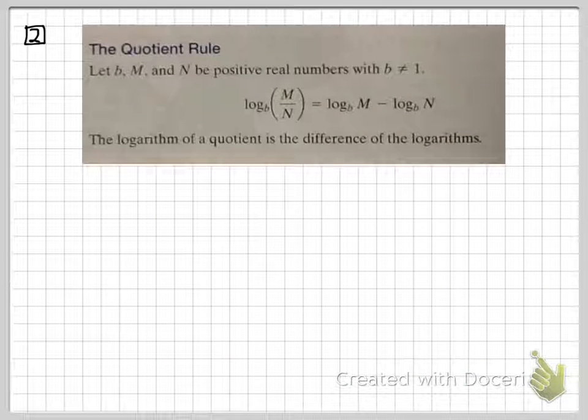The quotient rule is very similar. This one states that the log of a quotient is just the difference of the individual logs.